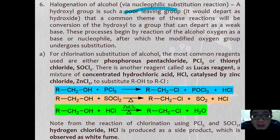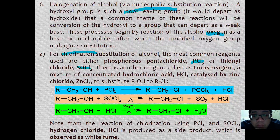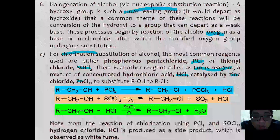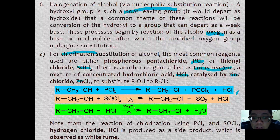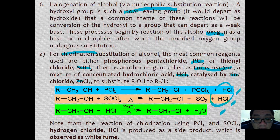This process begins by reacting the alcohol oxygen as a base or nucleophile, after which the modified oxygen group undergoes substitution. For chlorination substitution, the most suitable reagents are phosphorus pentachloride (PCl5) or thionyl chloride (SOCl2). There is also a reagent called the Lucas reagent, which is a mixture of hydrochloric acid catalyzed by zinc chloride. These reagents substitute ROH to become RCl. Note that for PCl5 and SOCl2 reactions, a white fume is released as a side product.